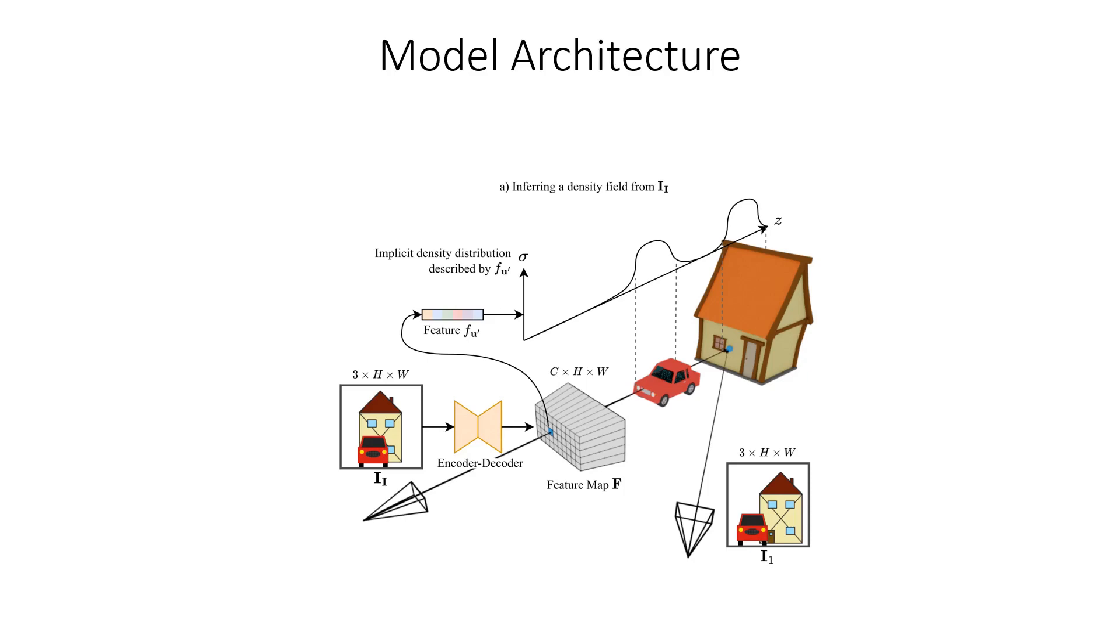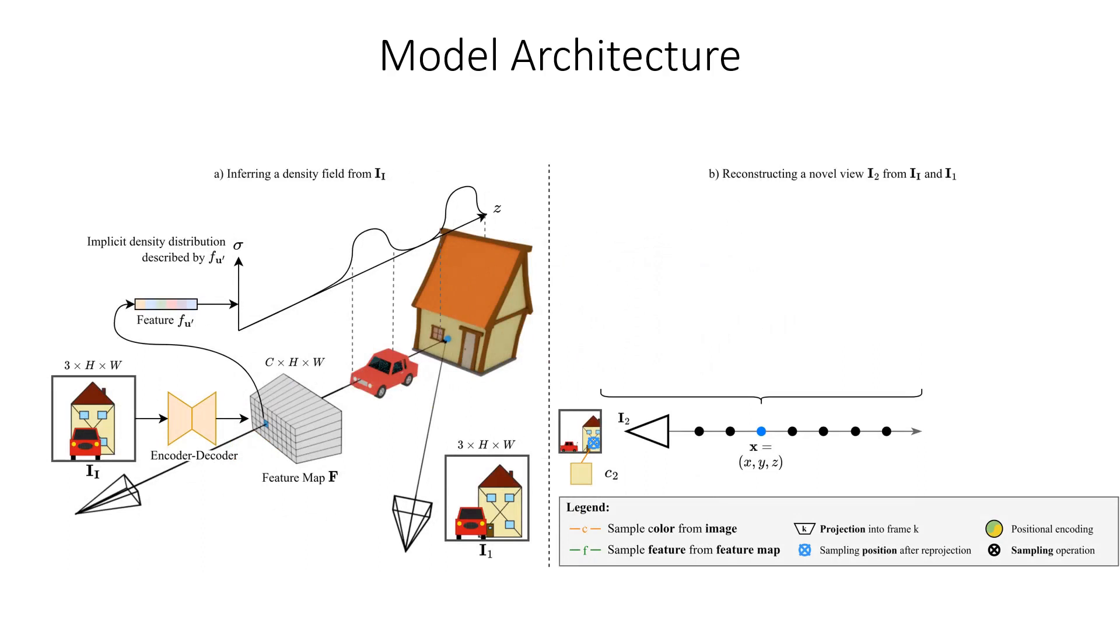Density along the ray can later be evaluated through a small MLP. In the second step, we perform volume rendering with ray casting. When considering a point X, we first reproject X onto the camera plane and sample the corresponding feature in the feature map. We then concatenate the feature with the positional encoding of the point coordinates and feed it into the small MLP. This small MLP finally outputs volumetric density sigma.